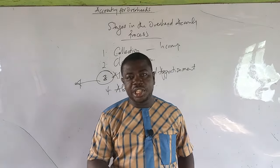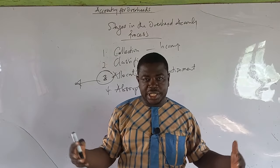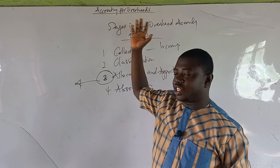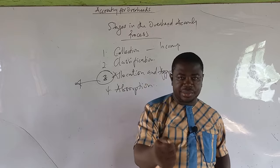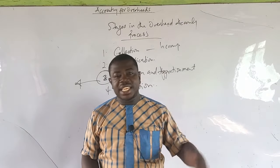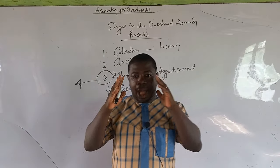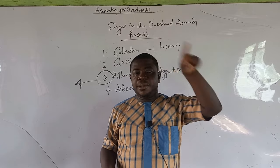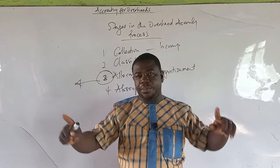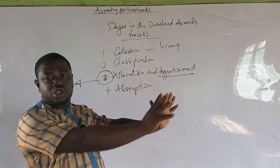Overhead apportionment means you cannot trace the cost to one department — both departments use the service jointly — so you share it according to the percentage of use. For example, if an electricity bill is $10,000 and department A consumes 60% while department B consumes 40%, you apportion 60% to A and 40% to B. Splitting one cost across different departments because they jointly enjoy it is called apportionment. Apportionment is about sharing; allocation is about giving to one without sharing.